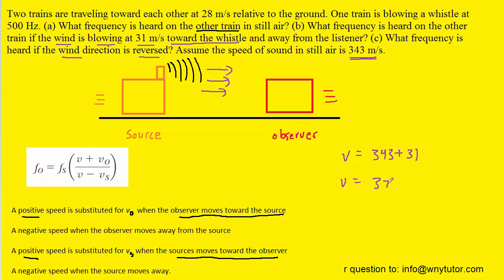And we're going to get 374 meters per second. So this will be the speed of sound. Notice that it's faster than the ordinary speed of sound again because the wind is sort of pushing the sound along as it travels towards the observer.